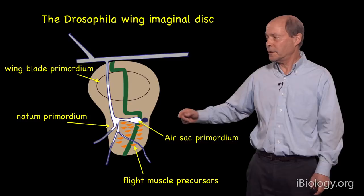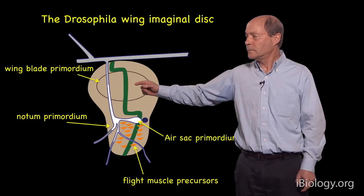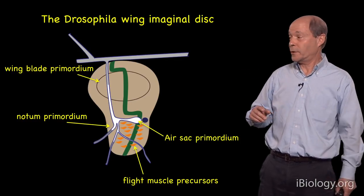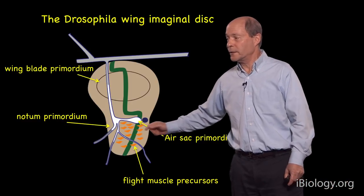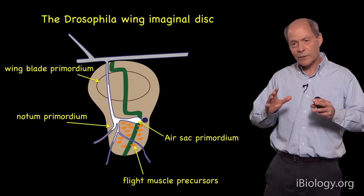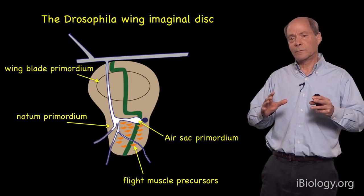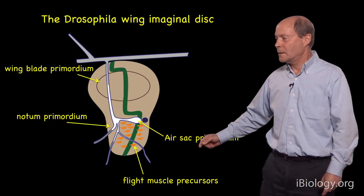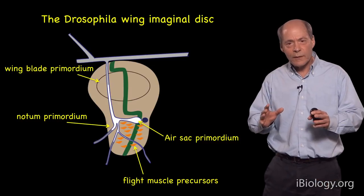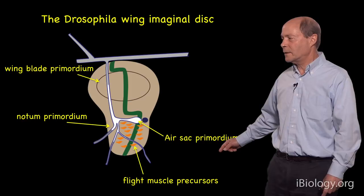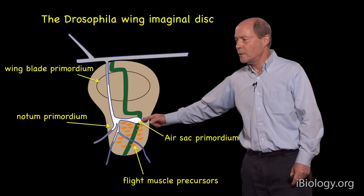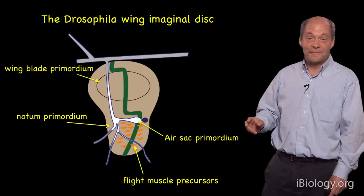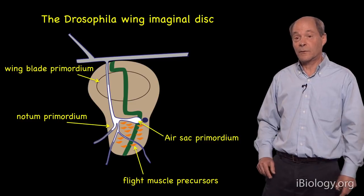The region of the disc indicated in this oval will go on to produce the actual wing blades — the wing blade primordium. The region called the notum primordium will produce most of the dorsal cuticle of the adult. The dorsal air sacs, the major tracheal organ of the adult, are produced by cells in what we call the air sac primordium — a rather small, nondescript-looking structure, but one that goes on to produce the major tracheal organ in the adult.